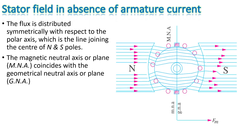Let us observe the stator field in the absence of armature current. If we assume that there is no armature current, then the flux distribution is symmetrical with respect to the polar axis, which is the line joining the center of north and south poles. The magnetic neutral axis or plane coincides with the geometrical neutral axis. It is visible in the diagram that the flux distribution is symmetrical on the top side and bottom side of this center line.